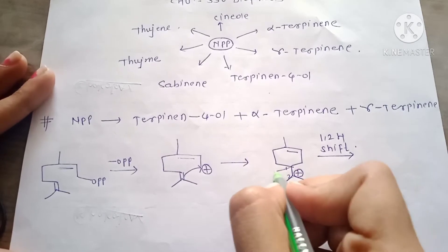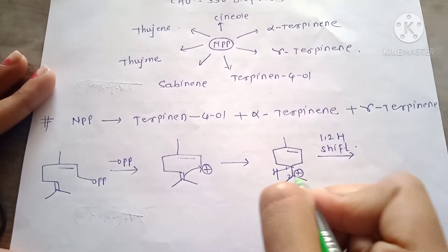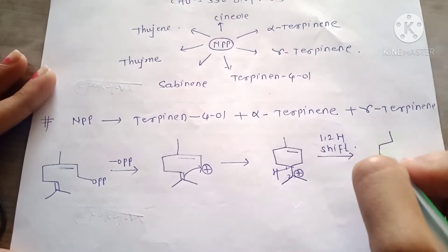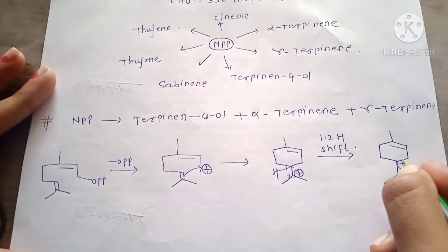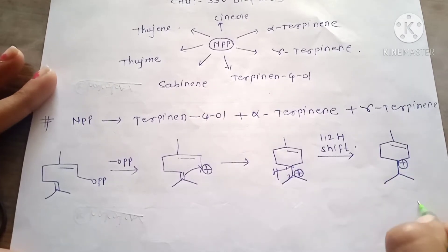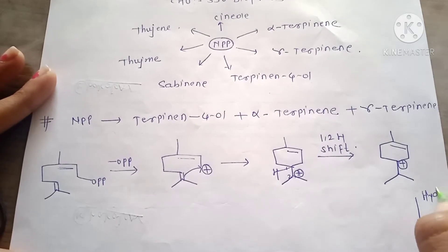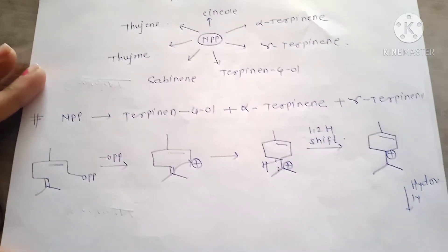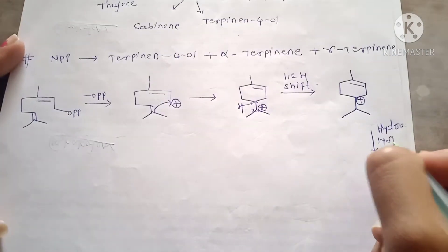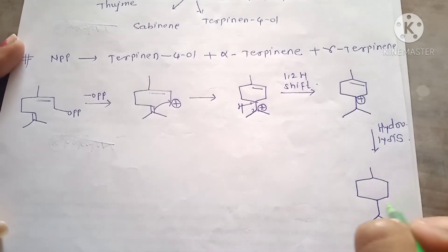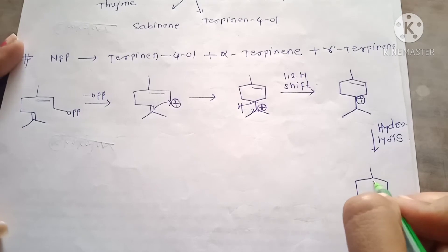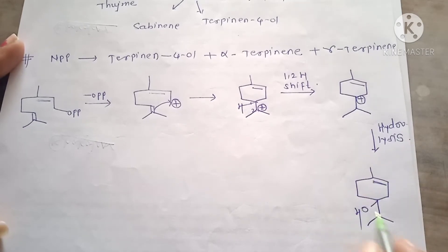In the 1,2-shift, this hydrogen shifts here and stabilizes the positive charge, and we get the new structure with positive charge here. Next step is the hydrolysis, and we will get the structure of terpinen-4-ol, with OH here, double bond here — this is the structure of terpinen-4-ol.